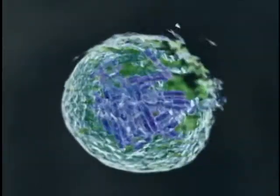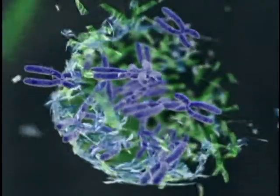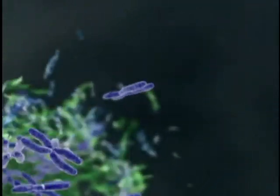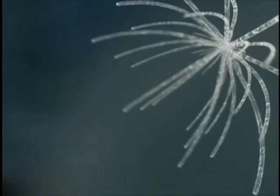Here, the chromosomes condense and the nuclear envelope breaks down. The mitotic spindle forms in preparation for chromatid separation.